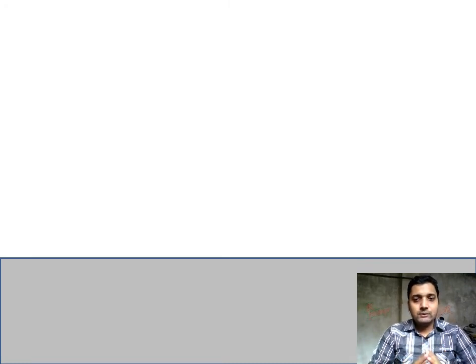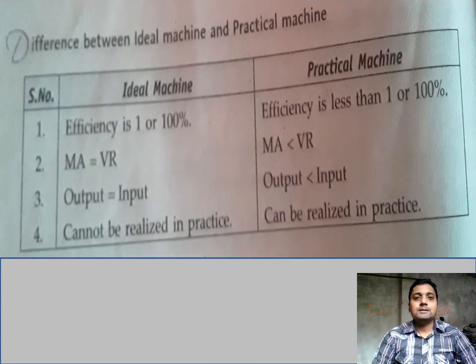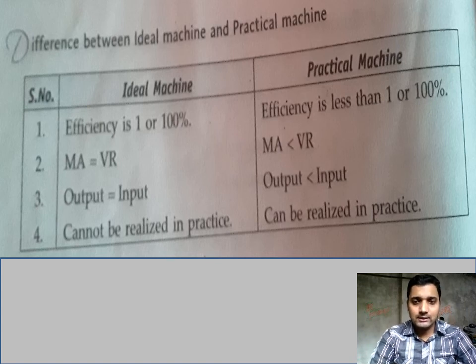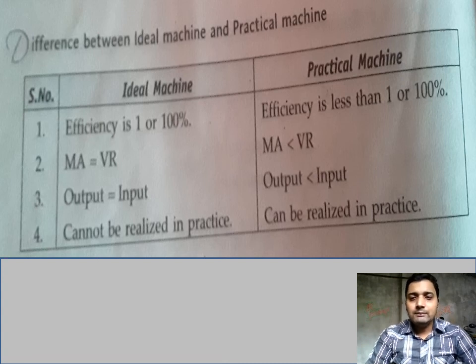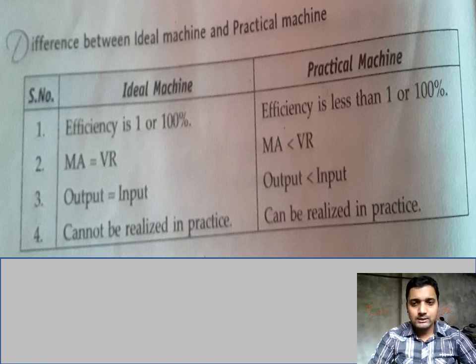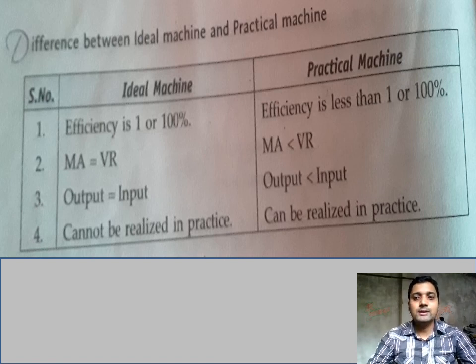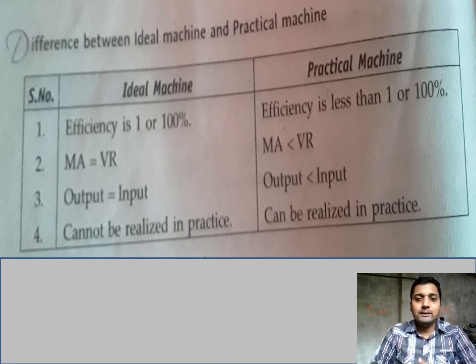The difference between an ideal machine and a practical machine: for an ideal machine, MA equals VR; for a practical machine, MA is less than VR. Efficiency is 100% for an ideal machine but less than 100% for a practical machine. Work input equals work output for an ideal machine, but output is always less than input for a practical machine. An ideal machine is not found in practice because some energy is always wasted in the form of friction. The machine we actually use is a practical machine. This is all about the fundamental concepts of a machine.